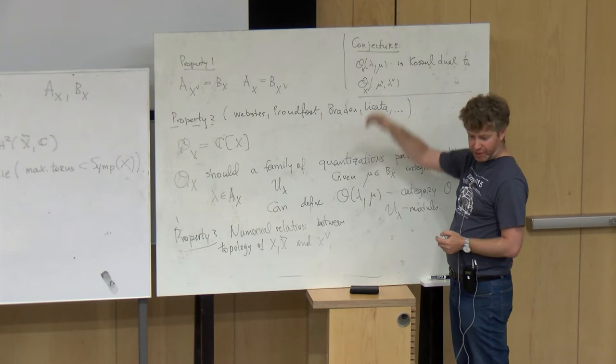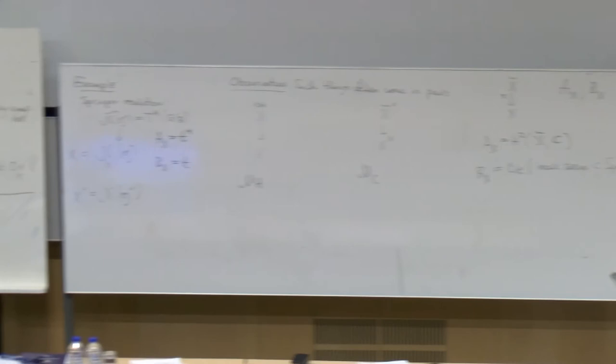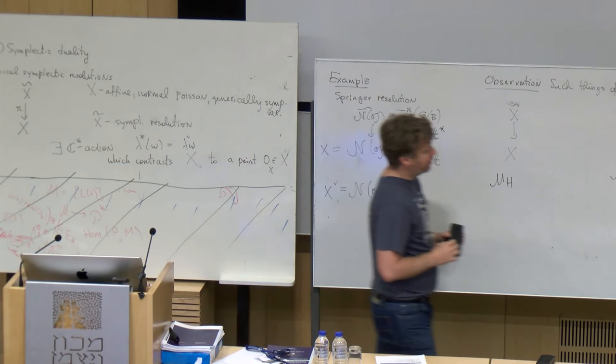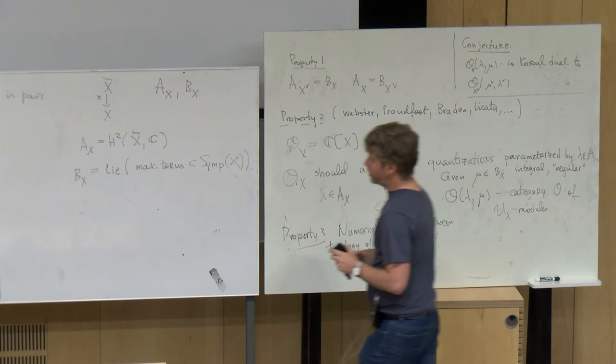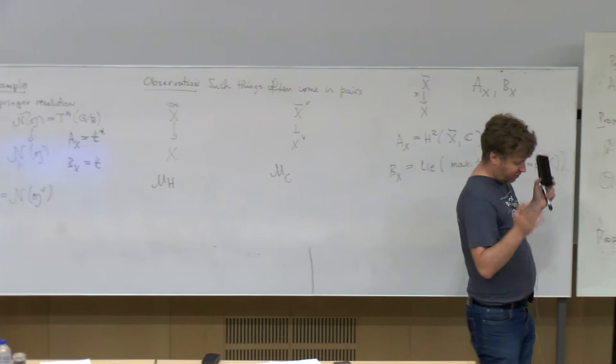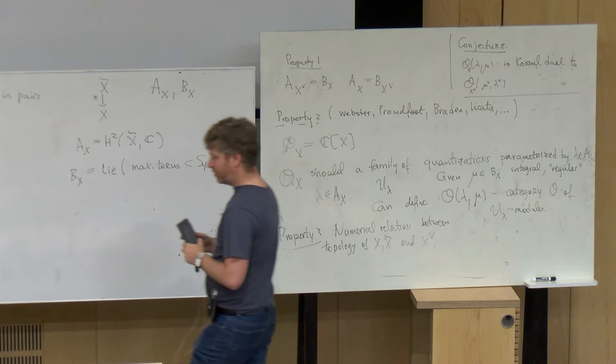There is also a bunch of numerical relations — property three — between various homologies on one side, between the topology of X and X-tilde and X-check. As with ordinary mirror symmetry, you can derive numerical information from this Koszul duality conjecture. So now with about eight minutes left I owe you two things: the construction, and what I mentioned about Higgs and Coulomb branches being examples of symplectic dual pairs.